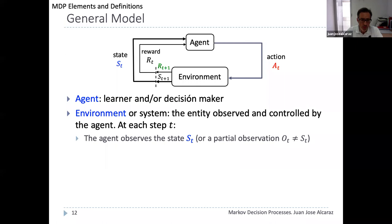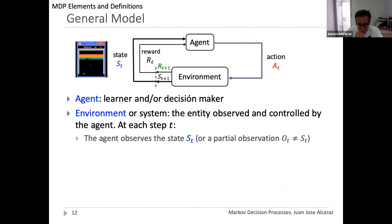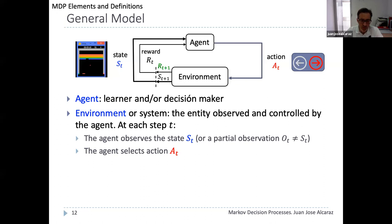In some cases the agent only receives a partial or incomplete observation of the state. In Atari games, for example, the agent observes the set of pixels on the screen — a multi-dimensional state where each pixel has a numerical value according to its color — but this is a partial observation because the full state includes the internal variables of the game program. Then the agent selects a control action a_t and sends it to the environment; in Atari games the action is for example the selected movement.